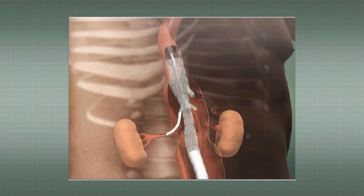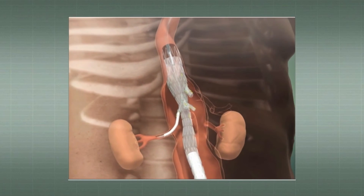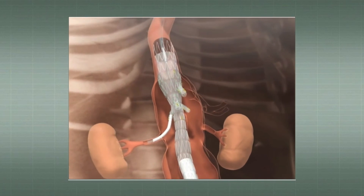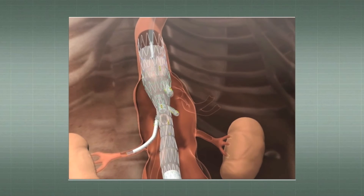Up to this moment, we have been using a system comprising a covered self-expanding stent followed by the inner deployment of a self-expanding bare stent to prevent kinking of the first.